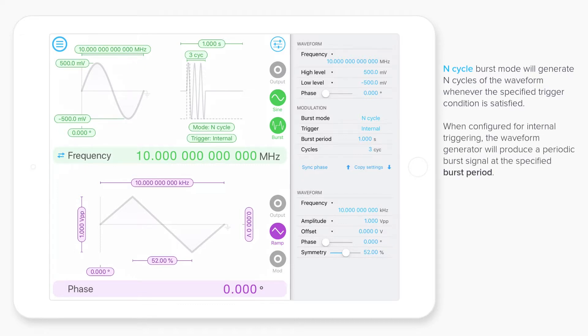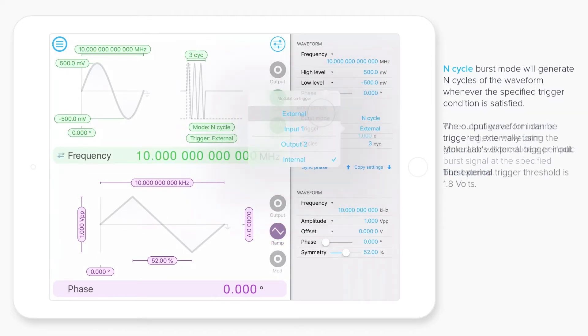So what we can do here is specify the burst period based on internal triggering mode. But another thing that we can do is specify a different type of trigger. So for example, we could use the external trigger. And so when that trigger event occurs, it will, in this case, produce three cycles of the waveform before settling and waiting for another trigger event.